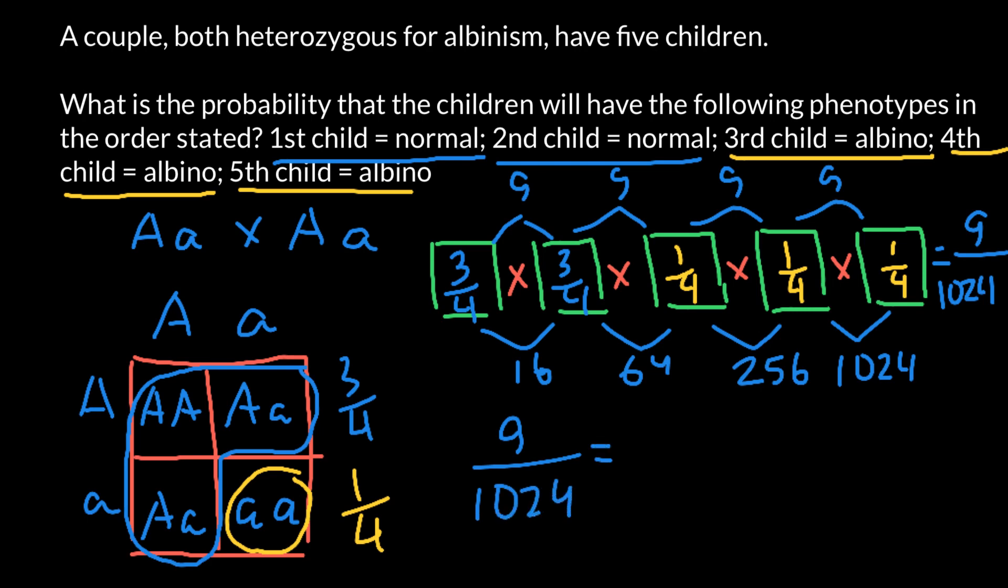And if you need an answer in percentage form, we just have to divide nine by 1024, and we are going to get 0.0087. This answer is on the scale between 0 and 1. If you need an answer in percentage form, we have to multiply this number by 100, or we can move this decimal point two places to the right. So in this case, our answer would be 0.9%.